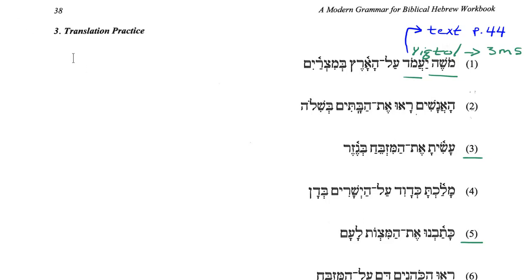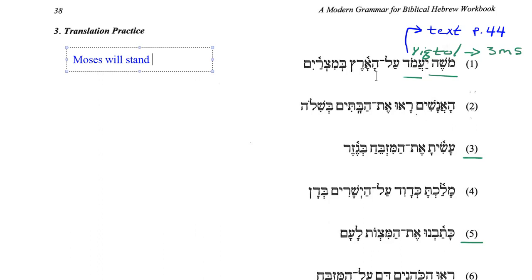So we'll go ahead and fill this out. We get 'Moses will stand' — that's the gloss translation of ya'amod. Then we have the preposition al, which means on, upon, concerning, to. And then ha'aretz. This is our word for land — eretz. When we put a definite article on it, the aleph lengthens the vowel under the definite article, and the vowel under the first letter changes. So instead of ha'eretz, we have ha'aretz. This happens for a handful of words. So: Moses will stand on the land.